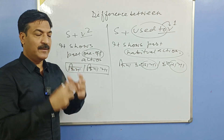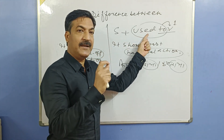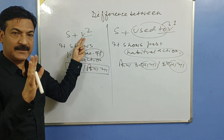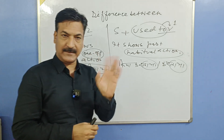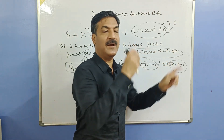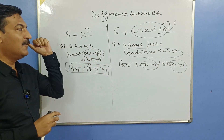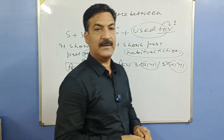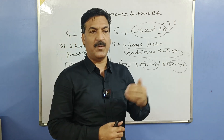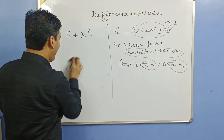Is that clear? Toh aap jab dono structures ke sentences mein fark dekho — 'you used to come' — we have three forms: positive, negative, and interrogative. This is very important for you to know how to say negative and question forms.